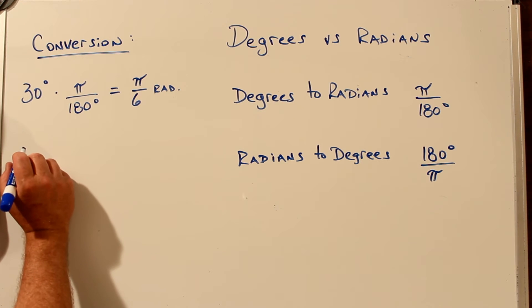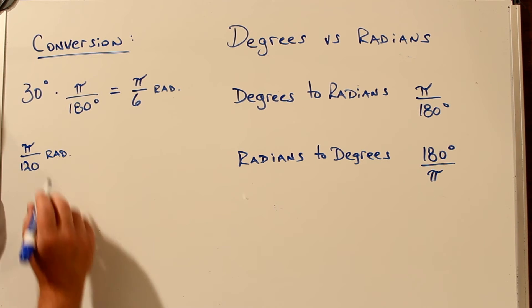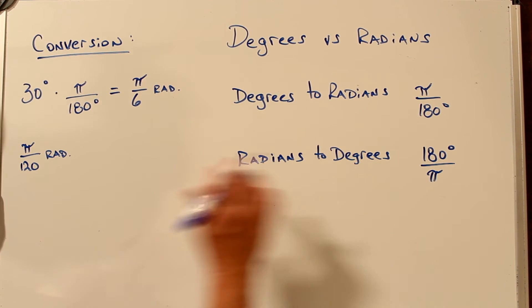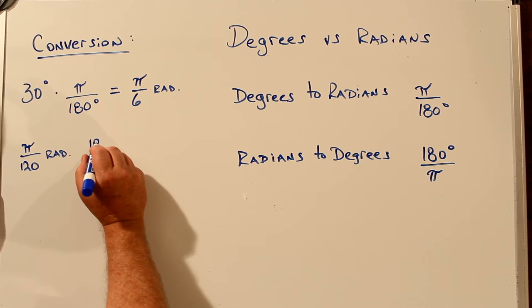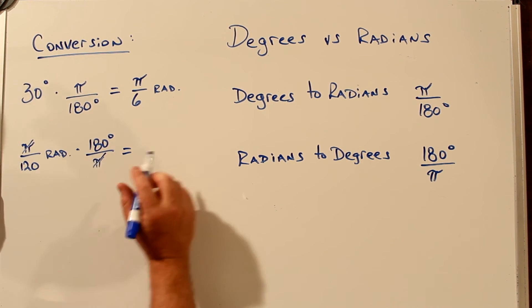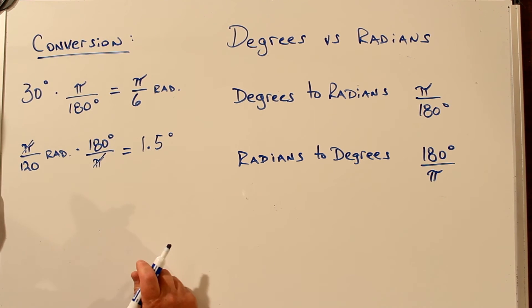To convert from radians to degrees, if you have pi over 120 radians, you can either remember the formulas, or you can remember you want to end up with degrees on top, and that would be this formula, pi on the bottom. Pies would cancel, and you have 180 over 120, or 1.5 degrees.